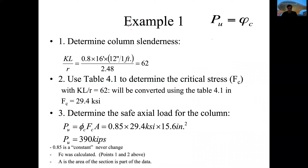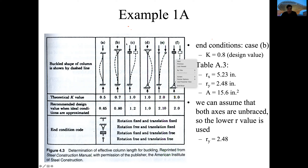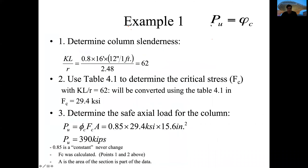There are three steps in this process. First, we determine the column slenderness. The formula is KL divided by R. K is 0.80 for our end condition Case B. We multiply by the length of the column which is 16 feet, then divide by the radius of 2.48 inches. Since the length is in feet, we multiply by 12 to convert to inches. So: 0.8 × 16 × 12 ÷ 2.48 = 62.